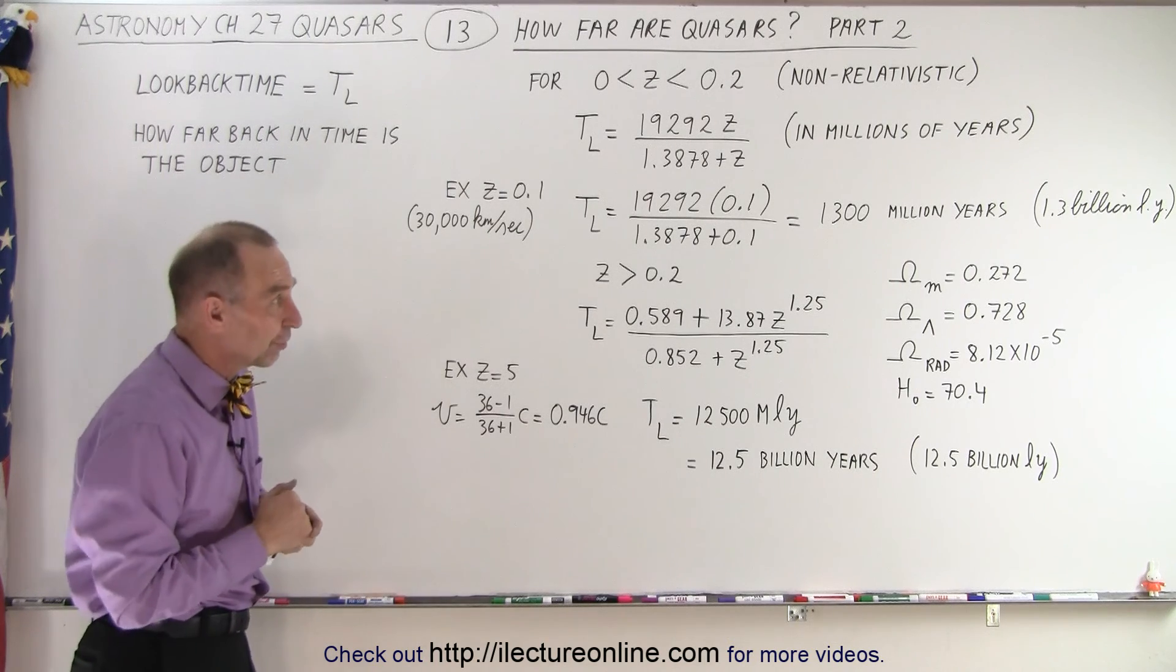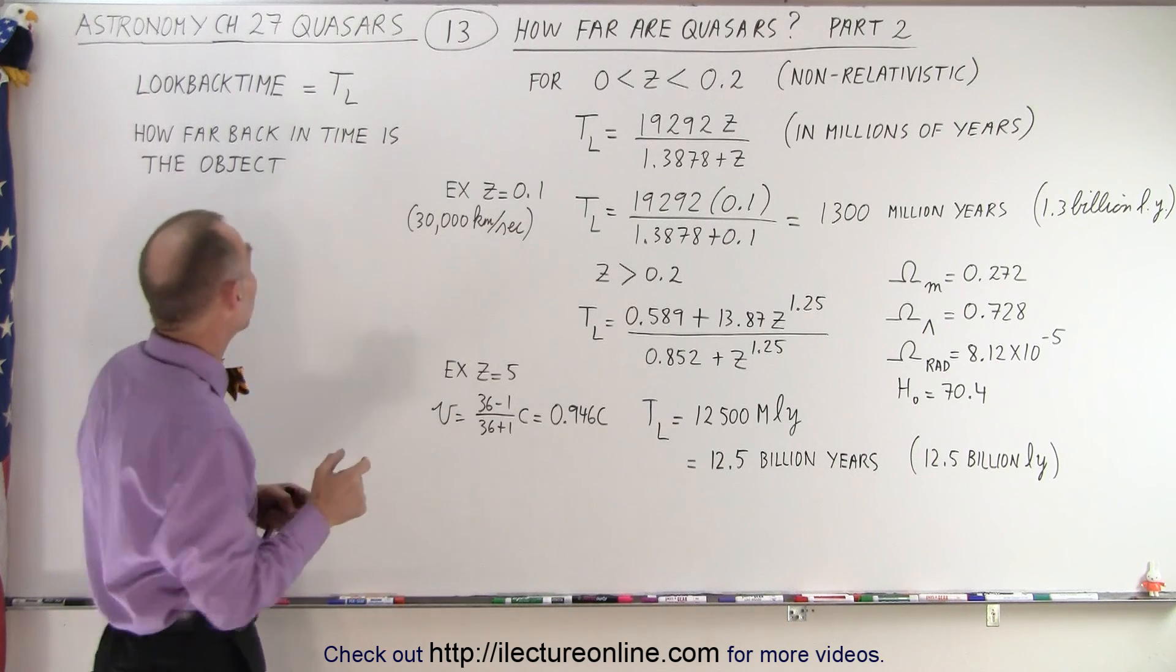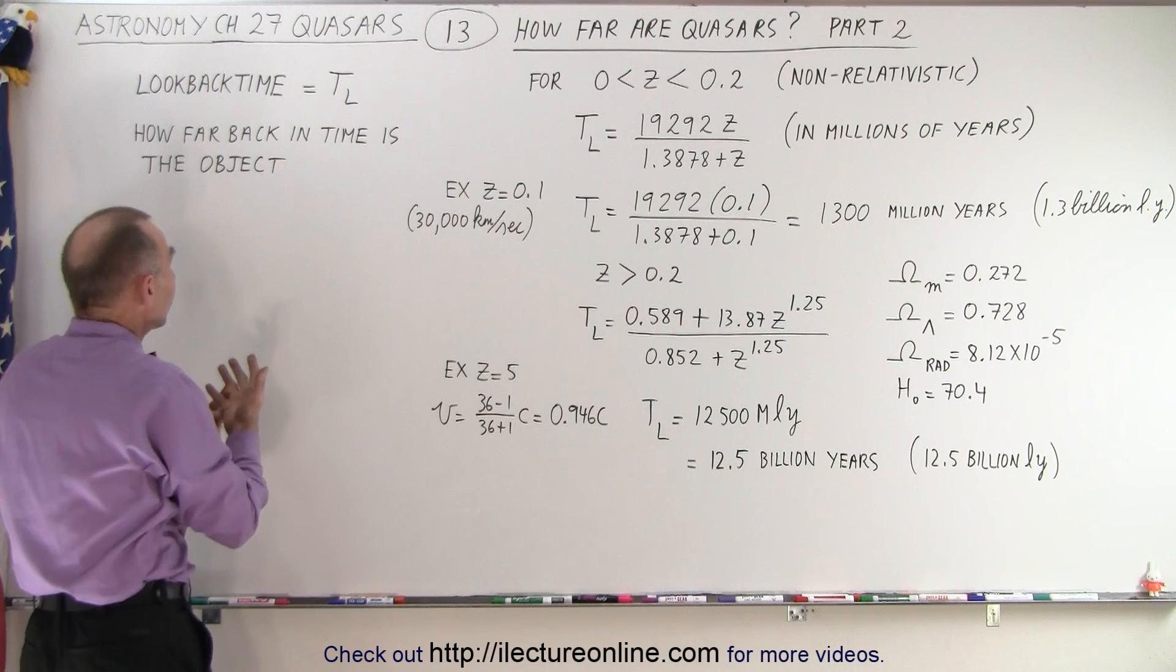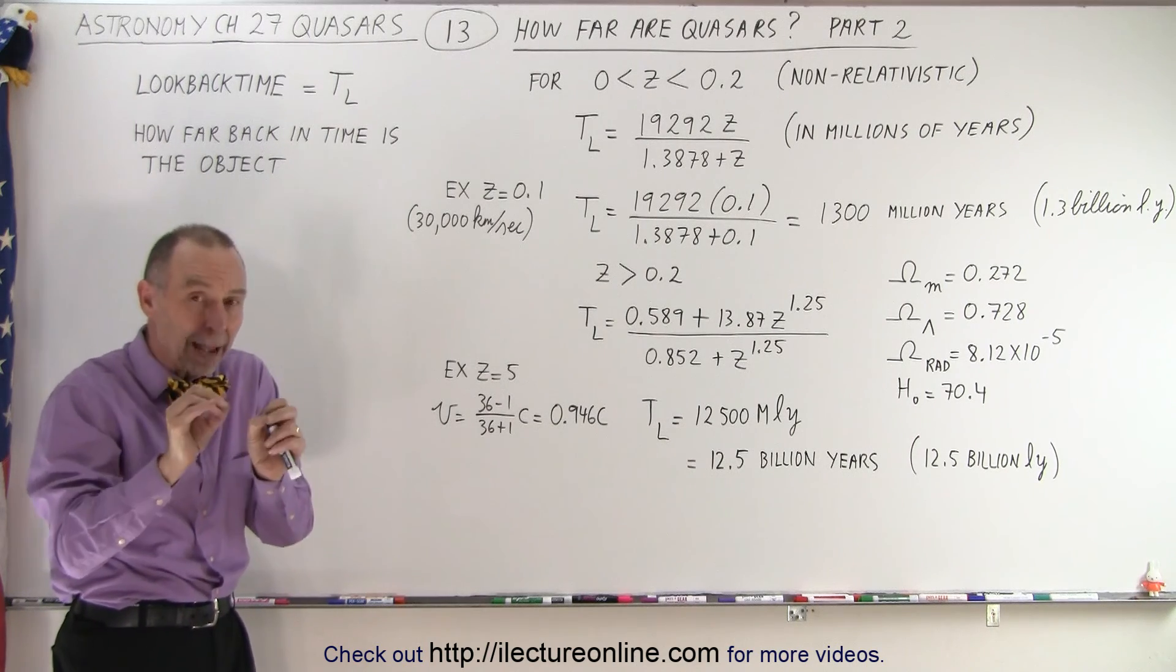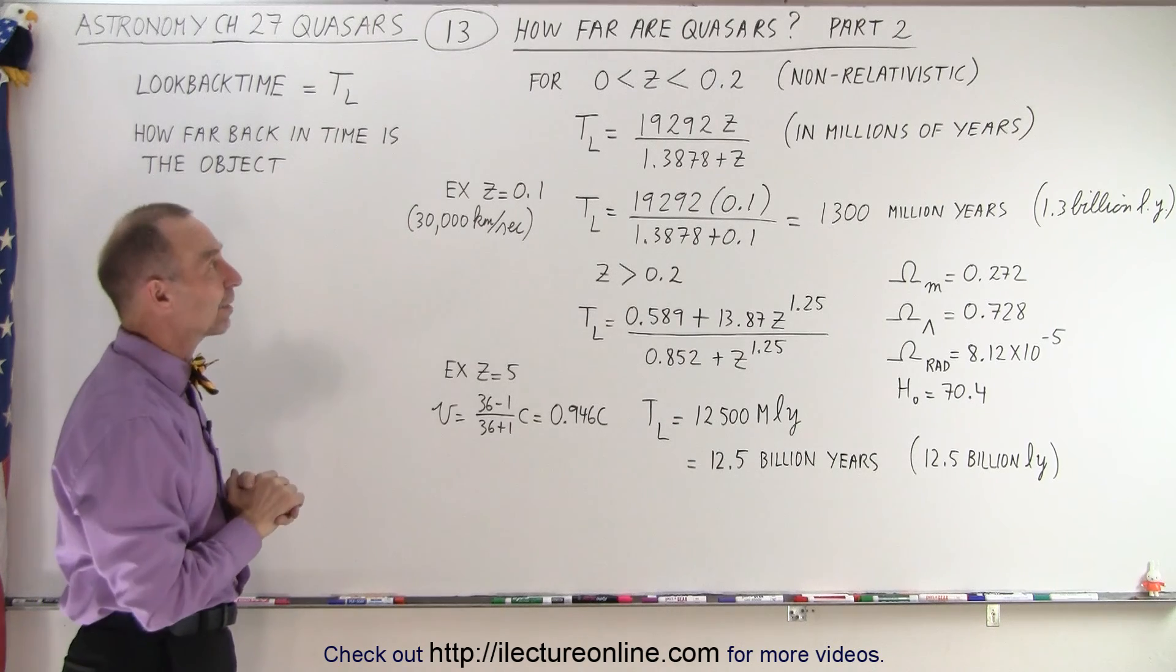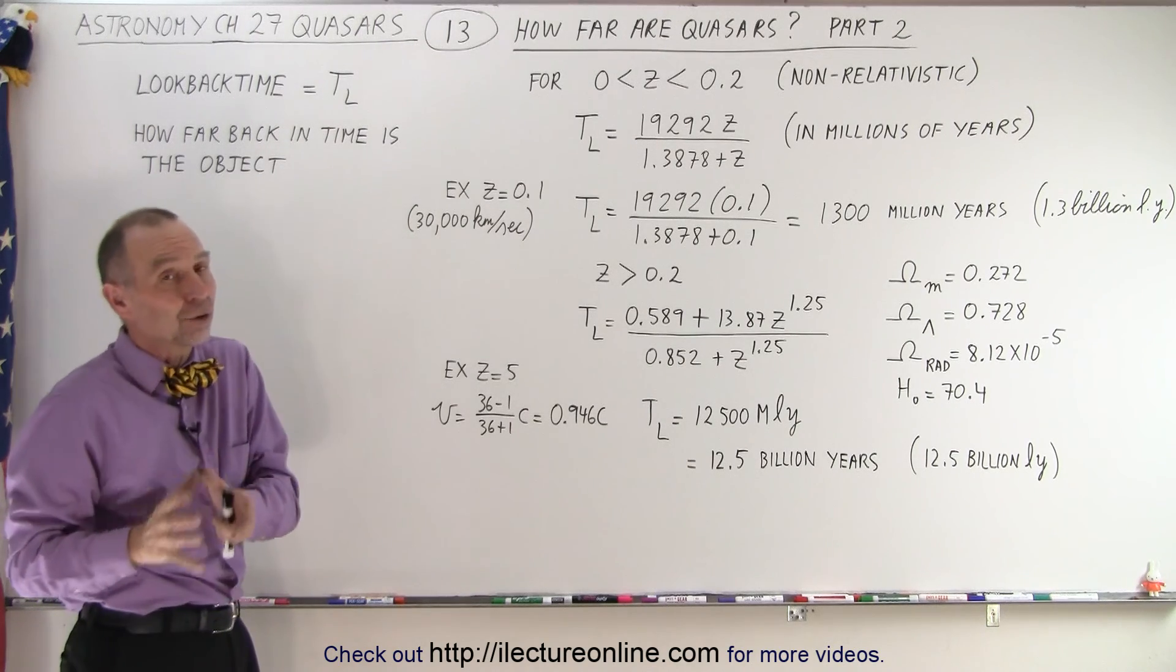and of course we can then turn that into light years, because we know that the speed of light is the speed at which radiation travels towards us. So we call that the look-back time, T sub L, and it tells us how far back in time the event happened.